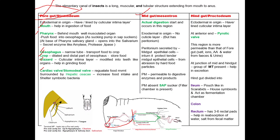The anterior-most part of the foregut is known as the mouth, which helps in ingestion of food material. Behind the mouth, there is a well-musculated organ known as pharynx. The function of the pharynx is to push food into the esophagus. In sucking pests, the pharynx acts as a sucking pump.